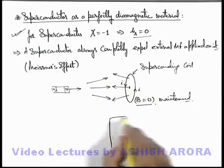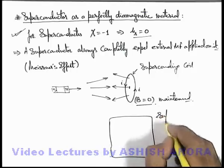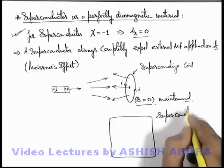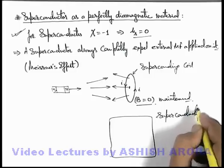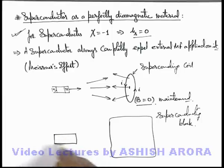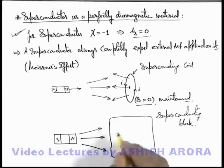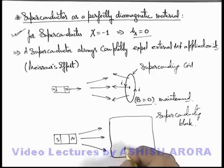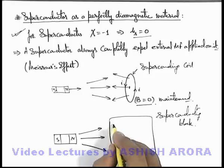Similar to this situation, say if we are given a superconducting block, if this is a superconducting material block and an external magnetic field is applied onto it, then as the magnet gets closer, at every point in the volume of this material miniature currents are induced.